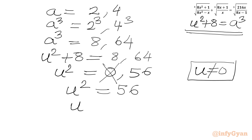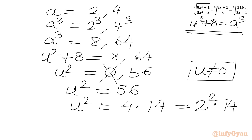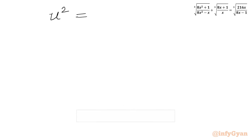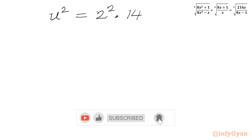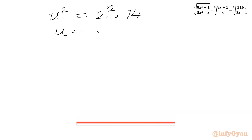Now I can factor 56 as 4 times 14, or 2² times 14. Taking square root of both sides: u² equal to 2² times 14, so u equal to plus or minus 2 times square root of 14.